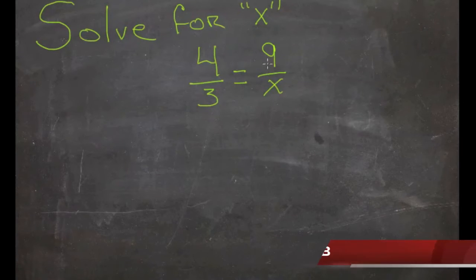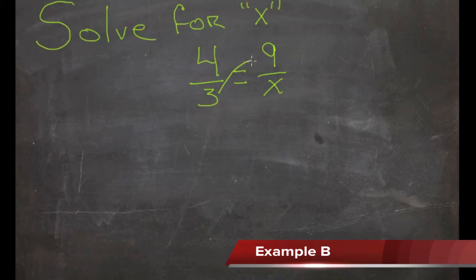Here we have another proportion. This one's all set up for us, so we just need to cross multiply. So we're going to take 3 in the denominator times 9 in the numerator. And that'll give us 27 for the right-hand side. And x in the denominator times 4 in the numerator will give us 4x on the left-hand side.